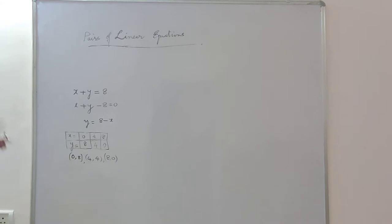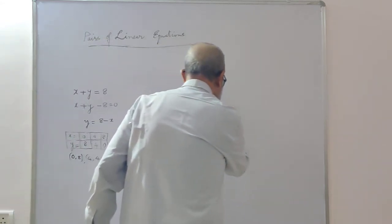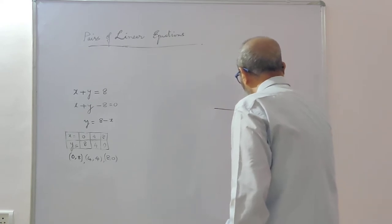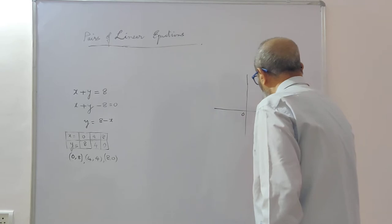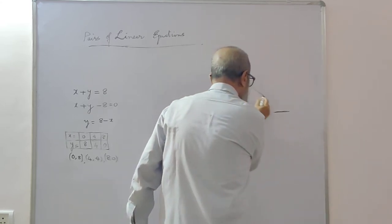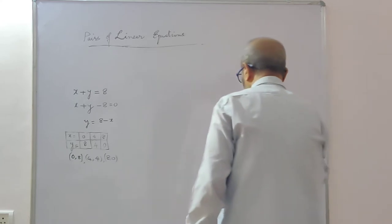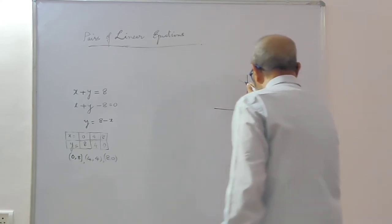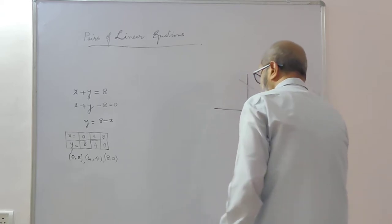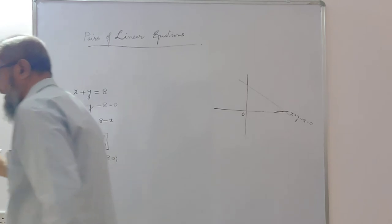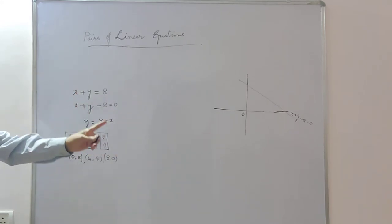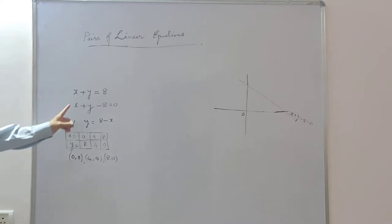If I take a graph sheet and mark the x-axis and y-axis, and mark these points — (0, 8), (4, 4), and (8, 0) — you will find that a straight line passes through all three points. This straight line graphically represents the equation x plus y minus 8 is equal to 0. So any equation with two variables where the power of both is 1 can be represented by a straight line on a graph sheet. That is why it is called a linear equation.